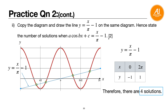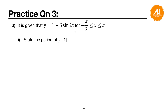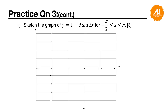Practice question 3: y = 1 − 3sin(2x), with a range of minus π/2 to π — watch out for this unusual range. First find the period: b = 2, so period = 2π/b = 2π/2 = π radians. Now sketch the wave. Divide into four intervals: π/2, π, 3π/2, 2π, and also add minus π/2 to respect the range.